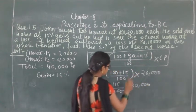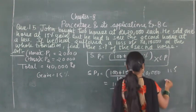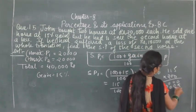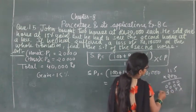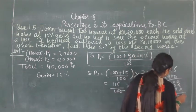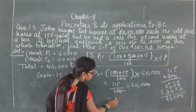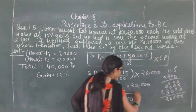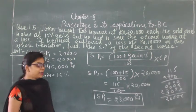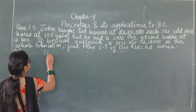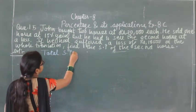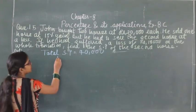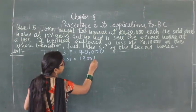The selling price of the first horse is ₹23,000. The total cost price is ₹40,000 and the loss on the whole transaction is ₹1,800. So the total selling price equals 40,000 minus 1,800.